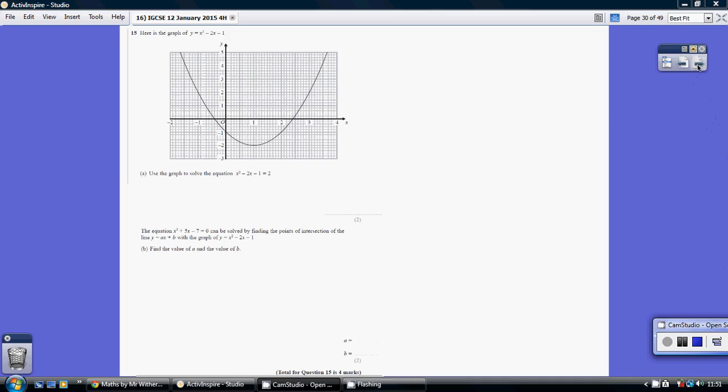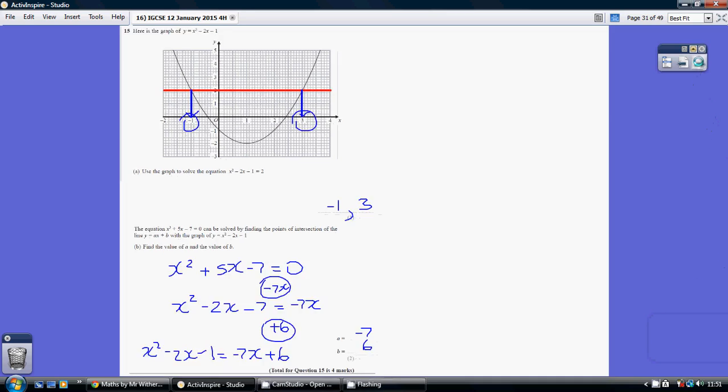Question 15. We've been given the graph y equals x squared minus 2x minus 1 and we've been asked to use the graph to solve this equaling 2.